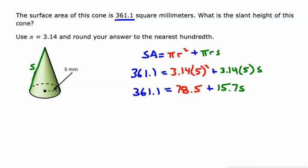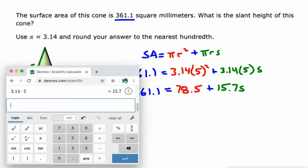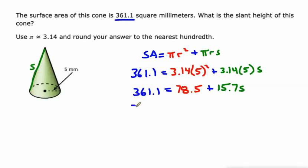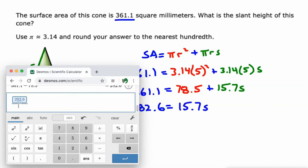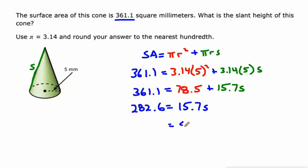Two steps away from having this equation solved. We need to take our surface area, 361.1, and subtract the area of the base, the 78.5. That gives us 282.6. So 282.6. That's our lateral surface area. And if we just divide that by 15.7, take our previous answer, divide it by 15.7, that'll give us our slant height, which is 18. So our slant height is 18 millimeters.